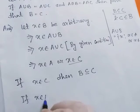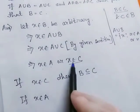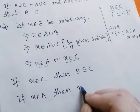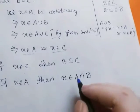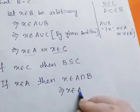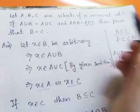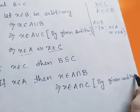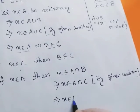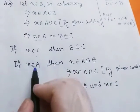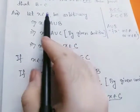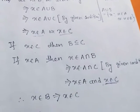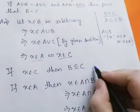Now if x belongs to A — since we started with x belonging to B and now x belongs to A as well — x belongs to both A and B, so x belongs to A intersection B. This implies x belongs to A intersection C by the given condition, which implies x belongs to A and x belongs to C. So x belongs to B implies x belongs to C. Therefore B subset of C. We name this case 1.